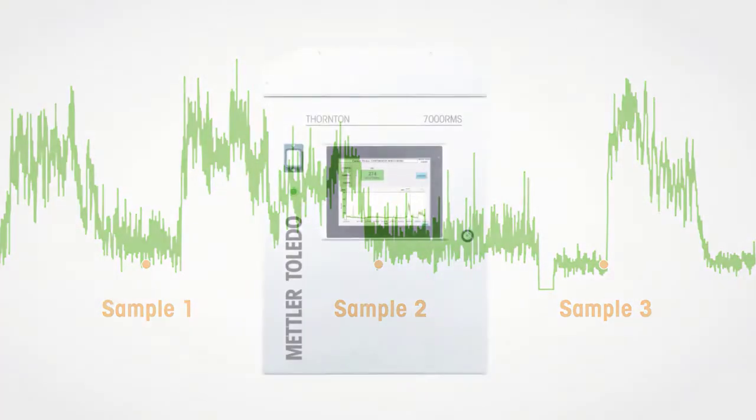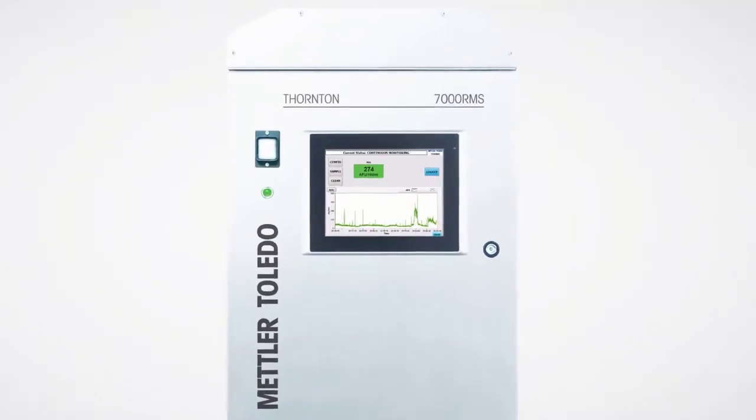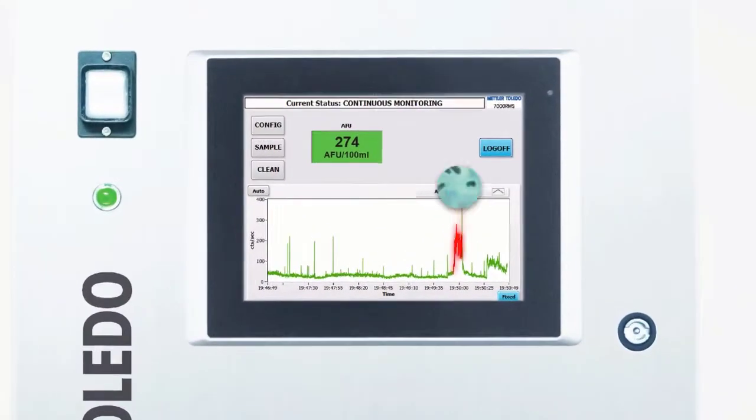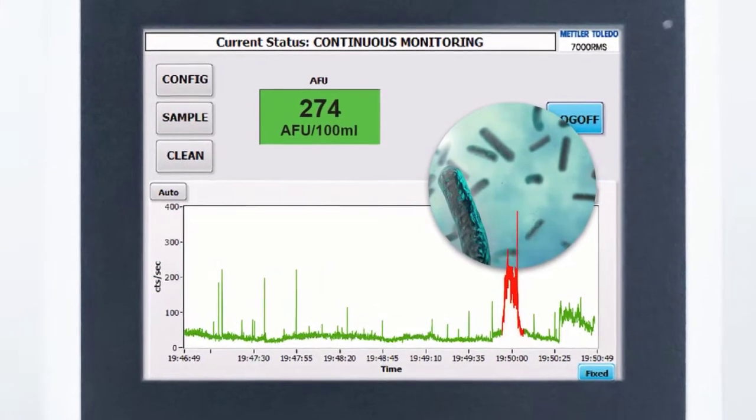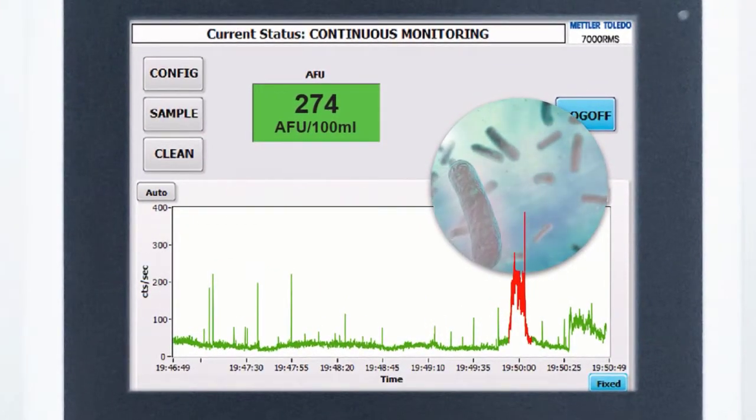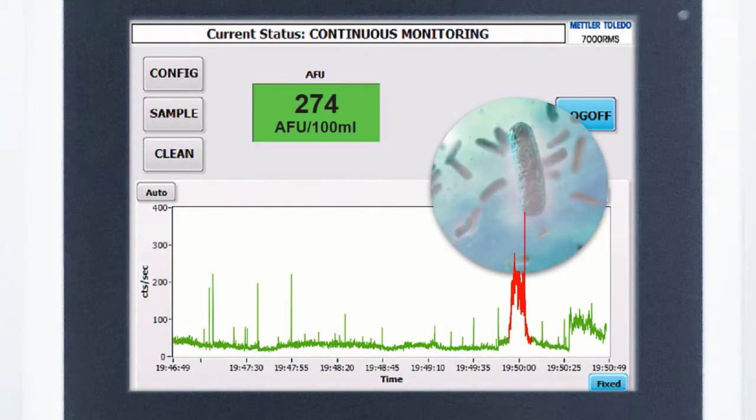When used in parallel with plate counting, the 7000 RMS real-time microbial detection analyzer can help you react quickly to any trend or excursion before it becomes an event, giving you complete process transparency for minimized risk and real-time water release.